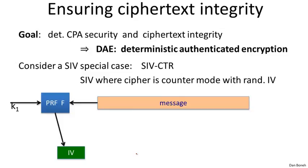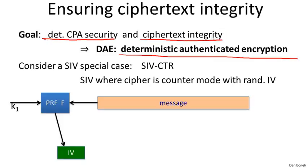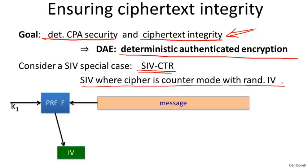Our goal is to build what's called Deterministic Authenticated Encryption (DAE), which means deterministic CPA security plus ciphertext integrity. Ciphertext integrity means that the attacker gets to ask for the encryption of messages of his choice, and then he shouldn't be able to produce another ciphertext that decrypts to a valid message. I claim that SIV automatically gives ciphertext integrity without the need for an embedded MAC.